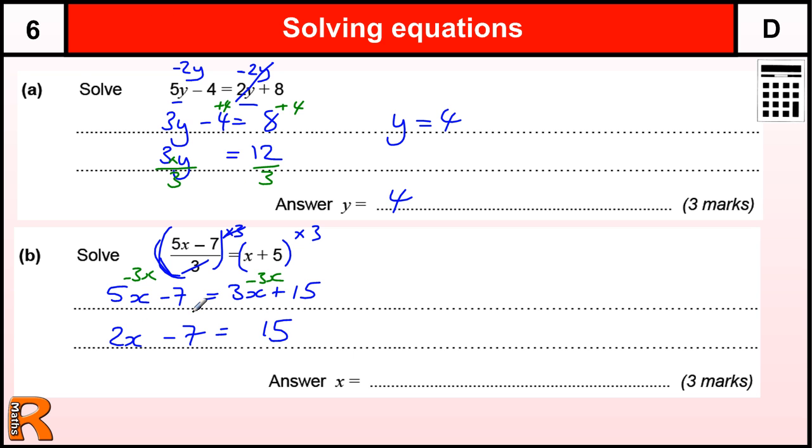Next, I need to add the 7 to both sides. I tend to always deal with the adding and subtracting before the multiplying and dividing. If you're doing the multiplying and dividing, you have to do it to everything. But adding and subtracting, you can do it individually.